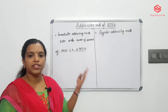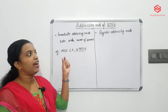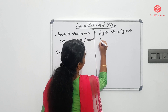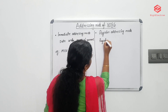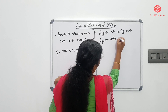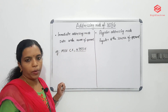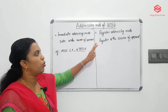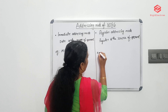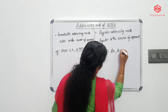The second one is register addressing mode. In register addressing mode, the source of operand is a register. You can see the name — register addressing mode — the source of operand comes from a register.